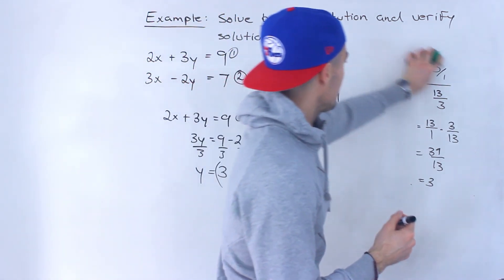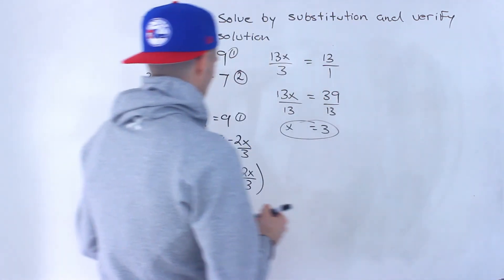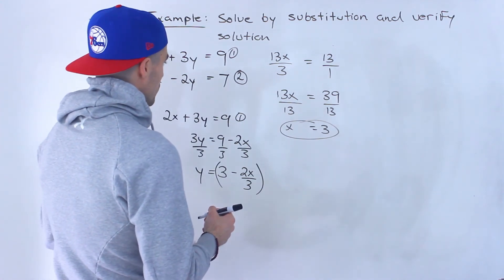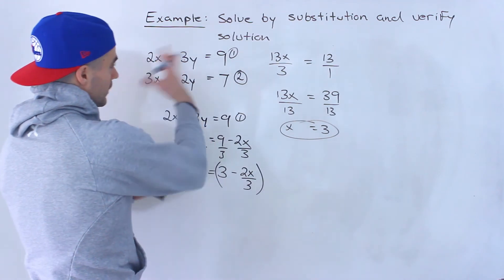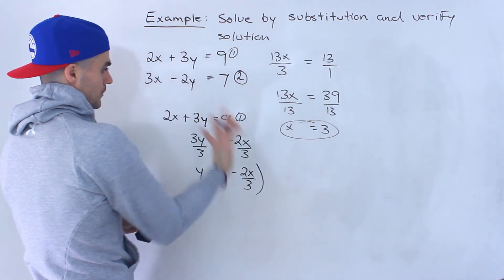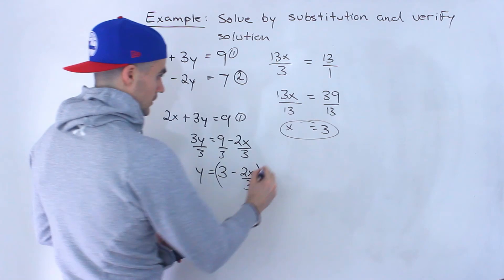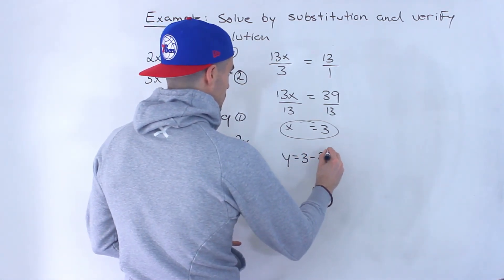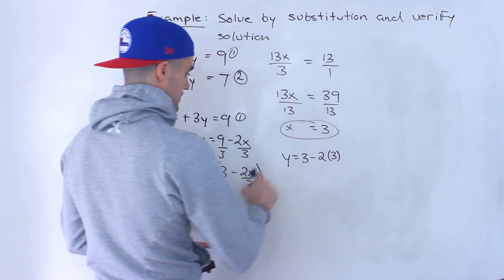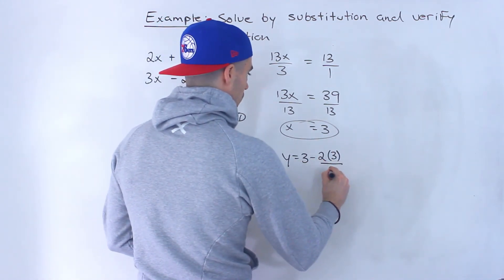So whichever way you do it, x is equal to 3. And then we could solve for the y value. We could plug it in. We could plug in this x value anywhere, really, and then isolate for y. Let's just do it over here. So we'll have y equals 3 minus 2 times 3, the x value, I'm plugging in there, over 3.